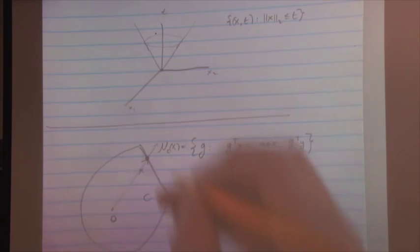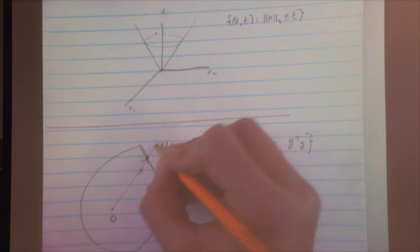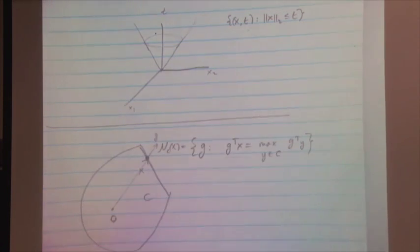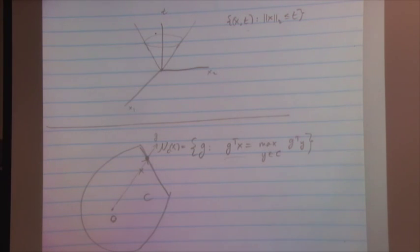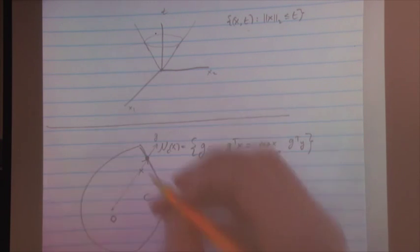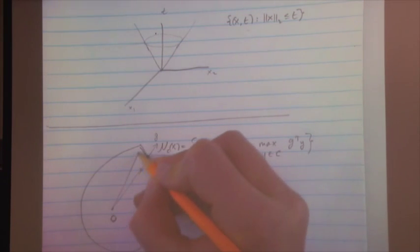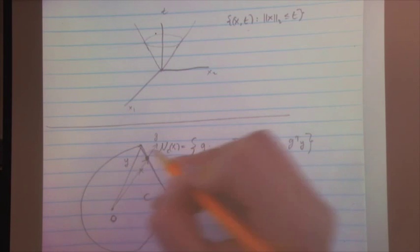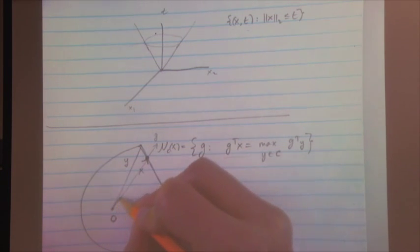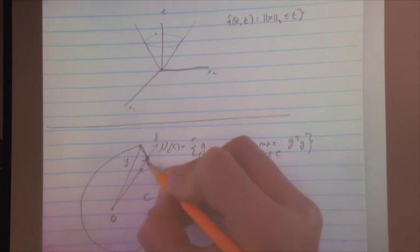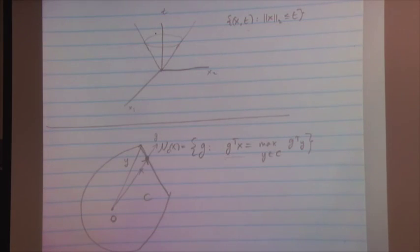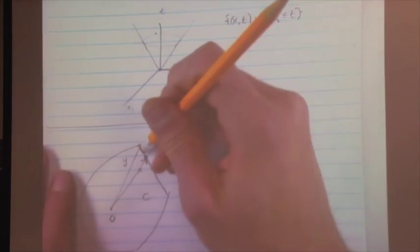Both theorems have partial converses: if every boundary point of a set has a supporting hyperplane, then under mild additional conditions the set must be convex. See Section 2.5 of Boyd and Vandenberghe for details.